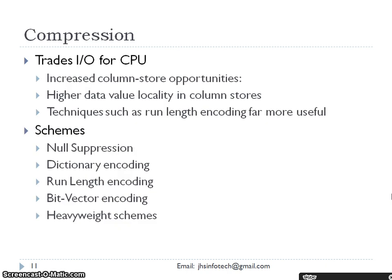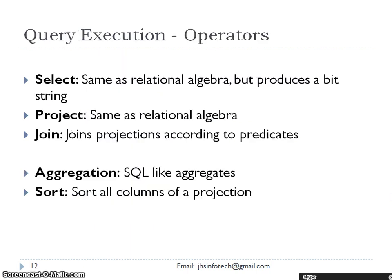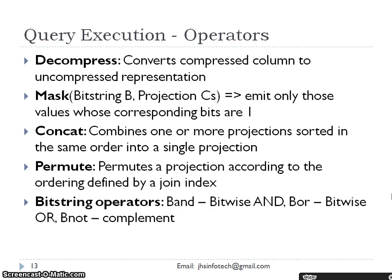We have compression, which trades input/output for CPU, increasing column store opportunities with higher data value locality. Techniques such as run-length encoding are far more useful in column stores. Compression schemes include: null suppression, dictionary encoding, run-length encoding, bit vector encoding, and heavyweight schemes. For query execution, we have select, projection, join, aggregation, and sort. Decompress converts a compressed column into an uncompressed representation.